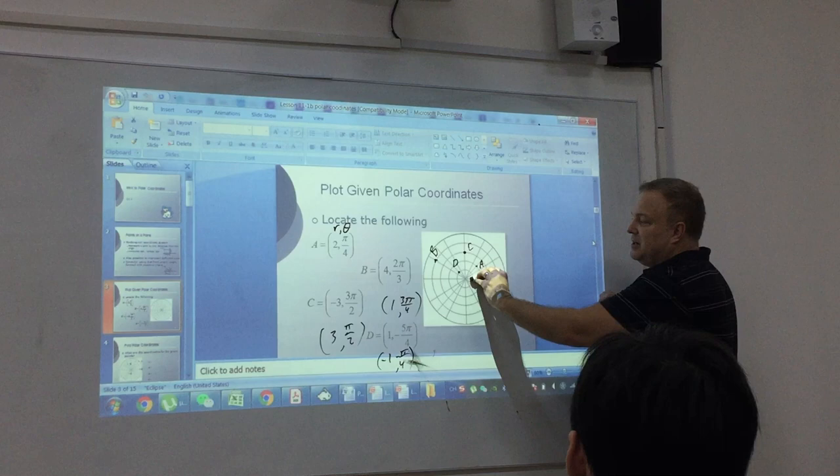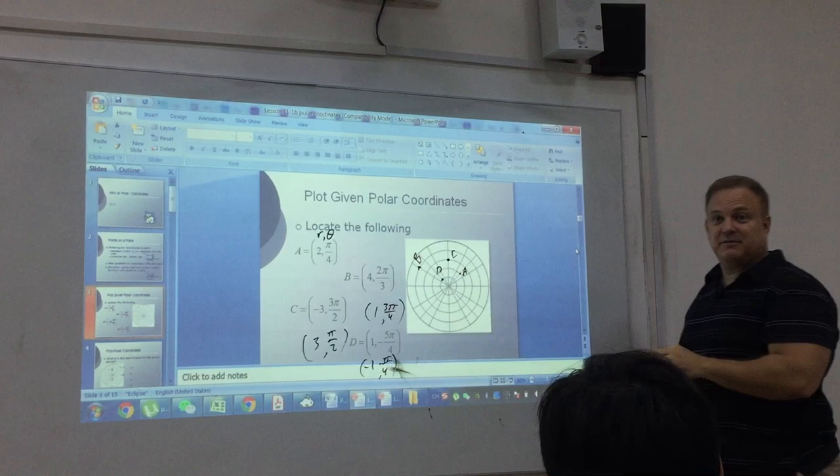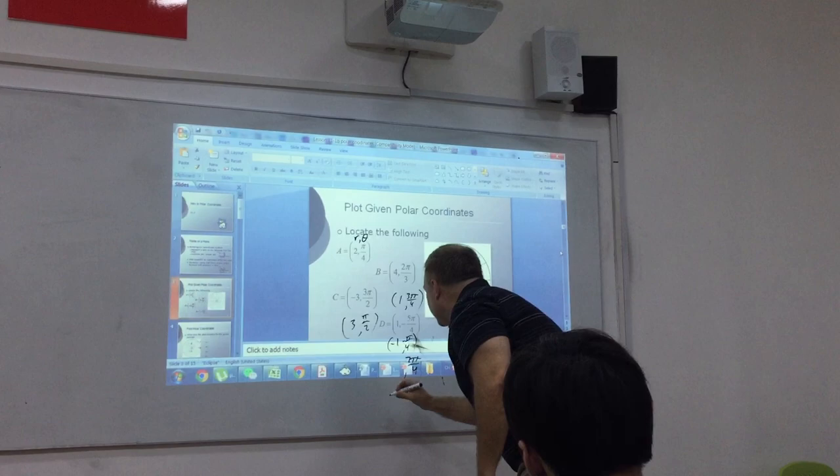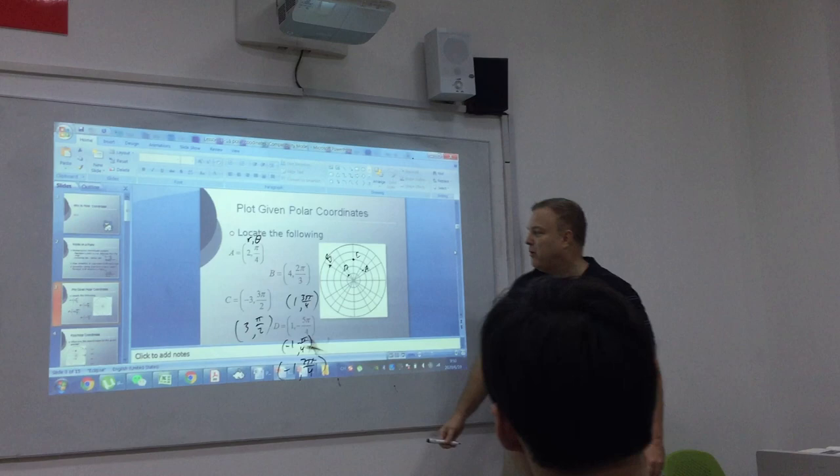So, again, positive angle in standard position, if I turn this far, all the way to here, what angle would that be? 7 pi over 4, 7 pi over 4, and that would give me a negative 1 for the R.